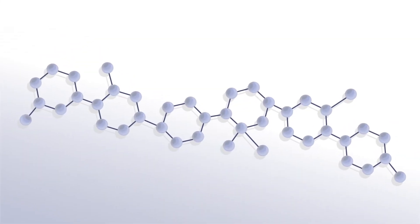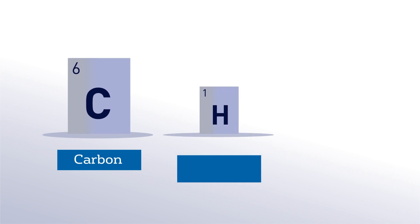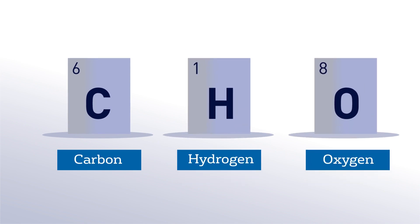Ecofilm accomplishes this with a new chemistry technology based on CHO polymers. These polymers only contain carbon, hydrogen, and oxygen. No phosphate is used.